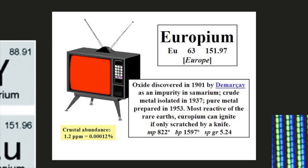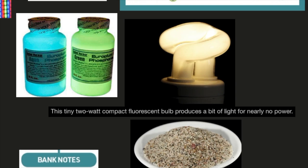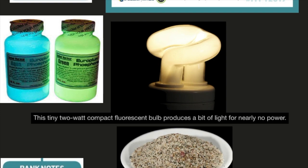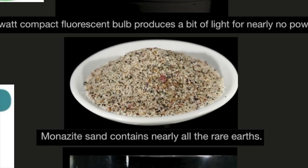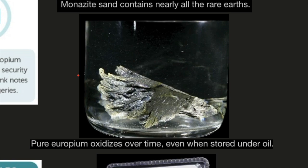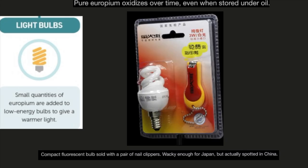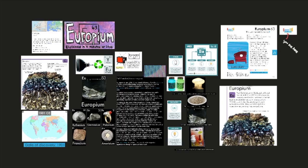Europium oxide discovered in 1901 by de Marquet as an impurity in samarium. Crude metal isolated in 1937. Pure metal prepared in 1953. Most reactive of the rare earths. Europium can ignite if only scratched by a knife. Here we have an image of a light bulb. This tiny 2 watt compact fluorescent bulb produces a bit of light for nearly no power. Here we have an image of monazite sand. Monazite sand contains nearly all the rare earths. Here we have an image of europium stored under oil. Pure europium oxidizes over time, even when stored under oil. Here we have an image of a package that has a fluorescent bulb and a nail clipper. Compact fluorescent bulb sold with a pair of nail clippers. Wacky enough for Japan, but actually spotted in China.